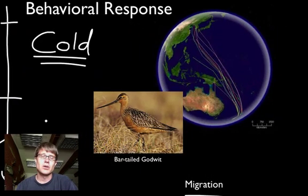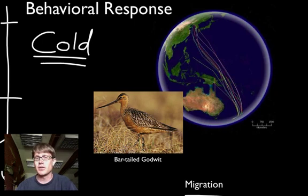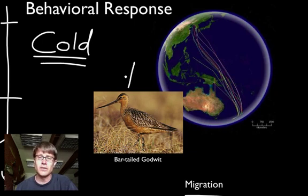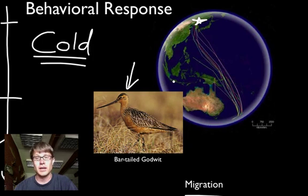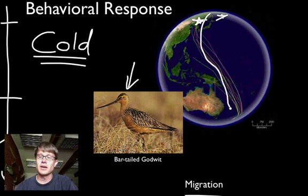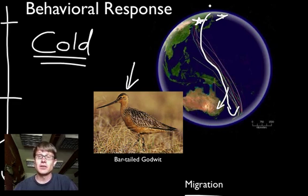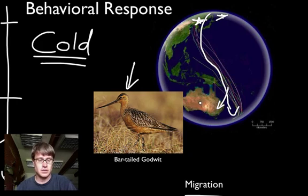Another way to survive a period of cold is to simply leave — that's migration. Caribou will migrate to a calving area or somewhere with a less harsh environment during the winter. But probably the most famous migrators are birds. The bar-tailed godwit is the record holder: they migrate from the northern hemisphere during summer, spending time in northern Asia or Alaska, then migrate all the way to New Zealand and Australia for their summer there. Instead of dealing with harsh climate, they're simply moving — this is a population-level behavioral response.